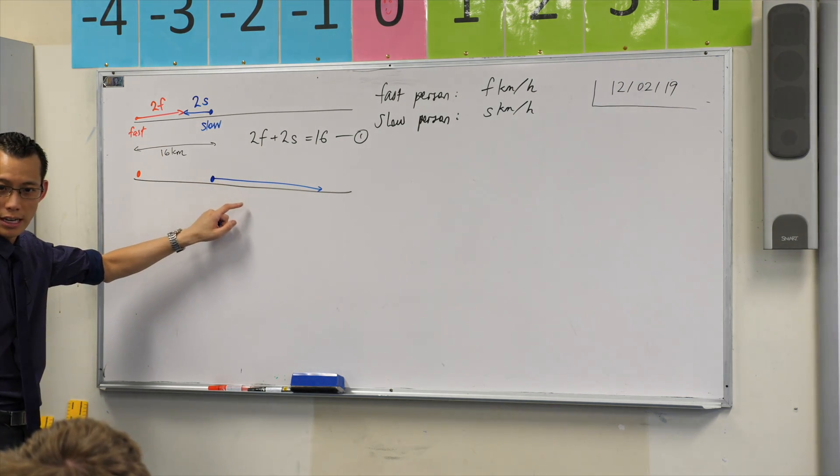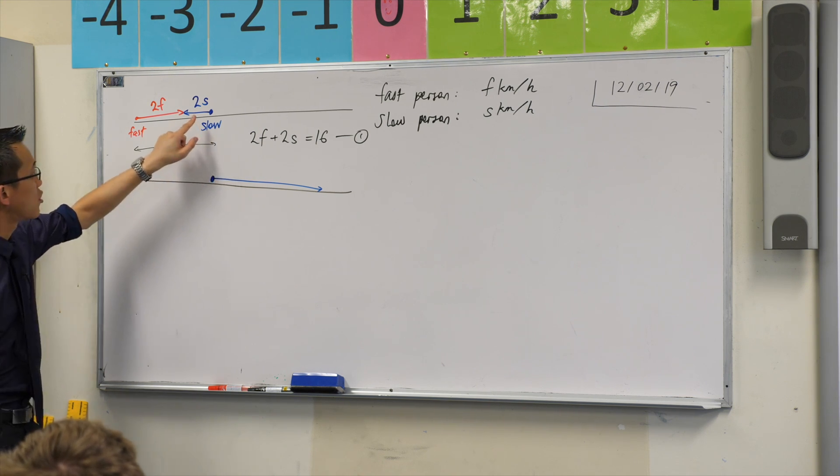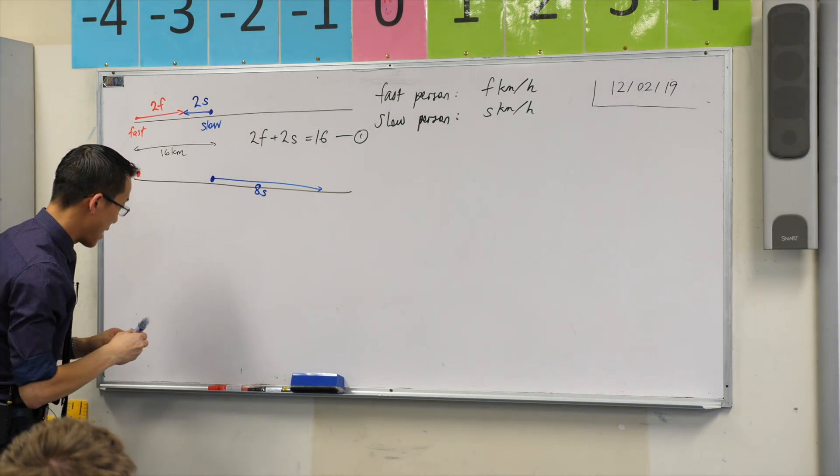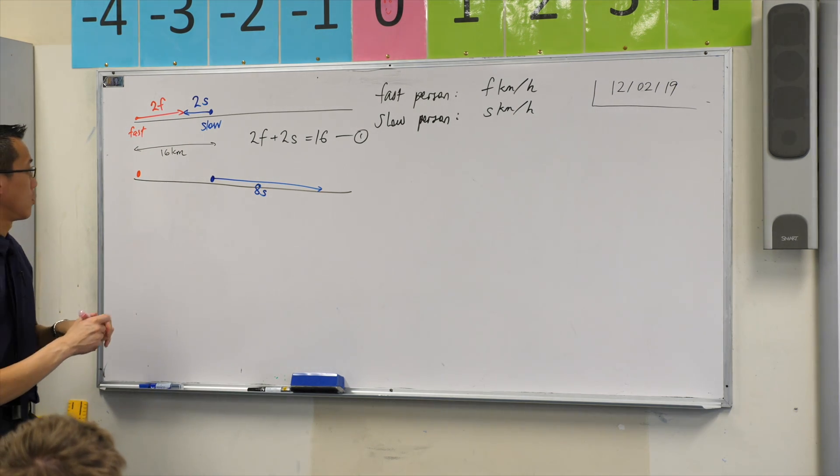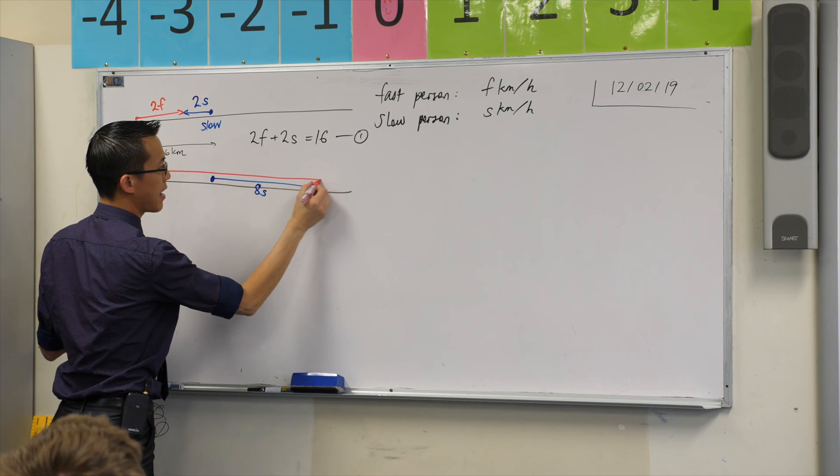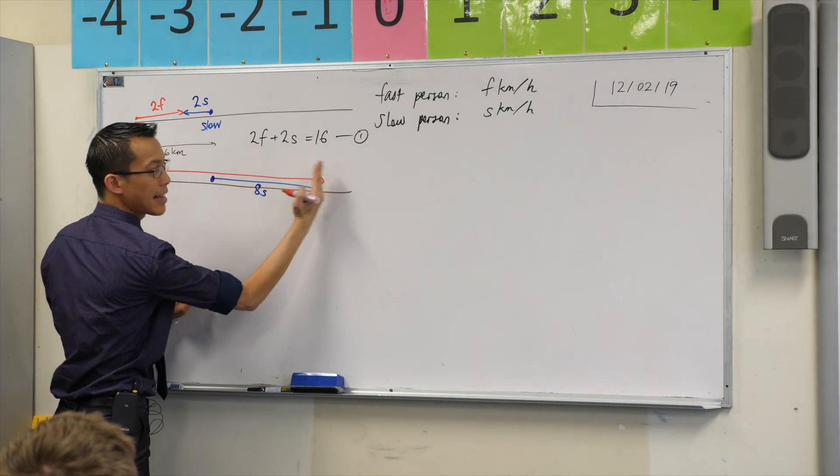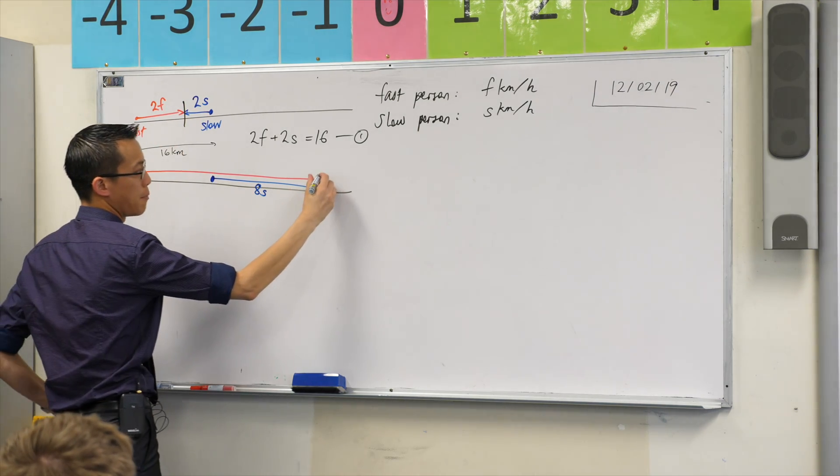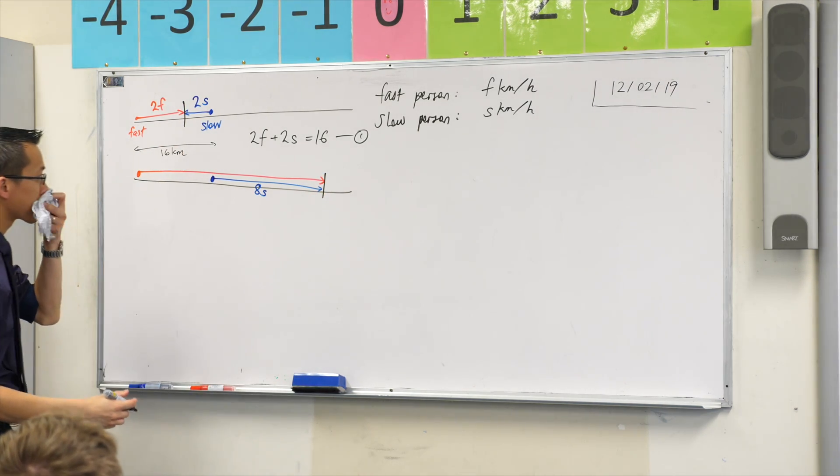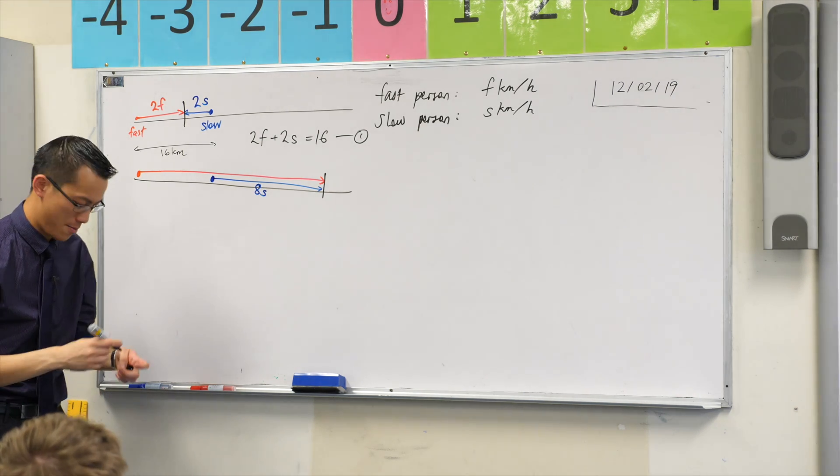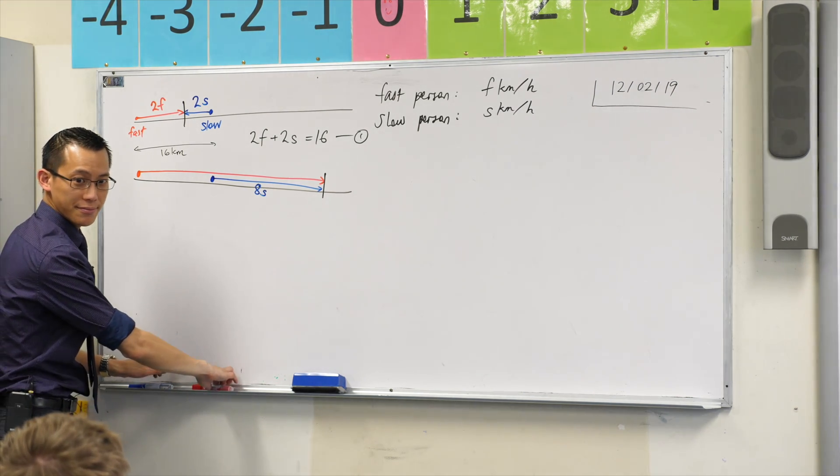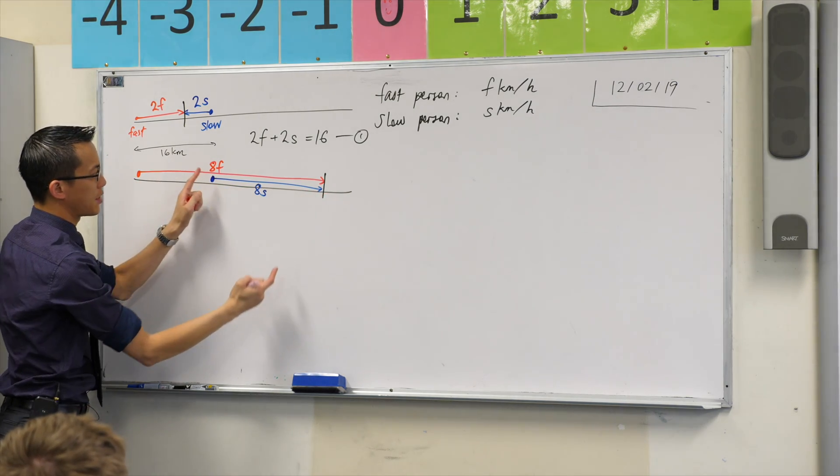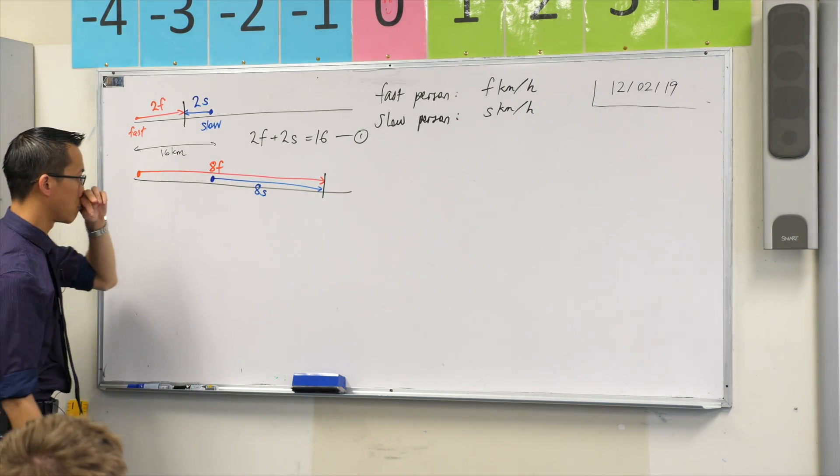How far does the slow person walk in that time? This was two hours, gave us 2s. So it's 8s. How far does the fast person walk? Well, they're gonna walk all this way and eventually catch up, and that's the meeting point. So I've got a meeting point here in the middle, and then I've got a meeting point over here on the side. The fast person's been walking for the exact same amount of time. So how far have they walked? 8f. It's a longer distance because f is bigger than s, it's faster.